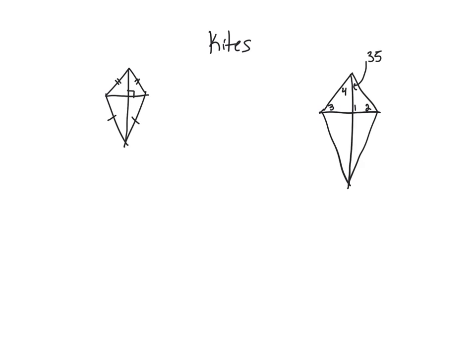The other thing we talked about was kites. So remember, kites have those two pairs of congruent sides, but none of the opposite sides are congruent, and then their diagonals meet at a right angle.